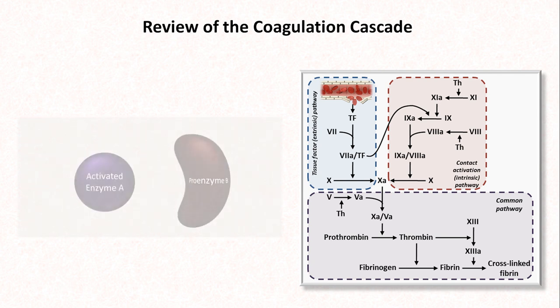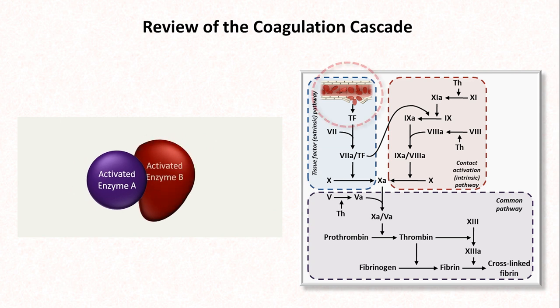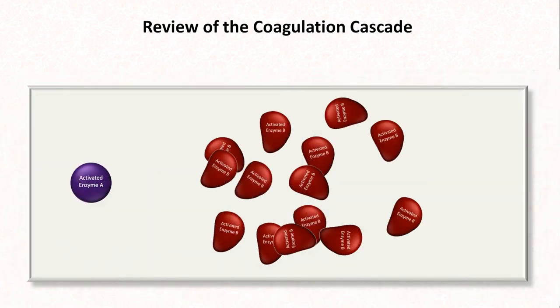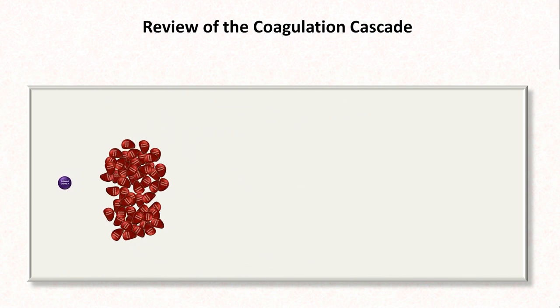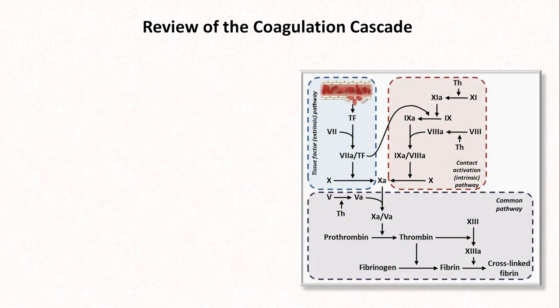The coagulation cascade is a complex system of enzymes in which injury to a blood vessel wall triggers a specific sequence of reactions in which one enzyme activates another, which then activates another, and so on, with each enzymatic step amplifying the reaction. Near the end of the sequence is the activation of thrombin, which then has the final result of cross-linking a non-enzymatic protein called fibrin, which comprises the majority of a blood clot.